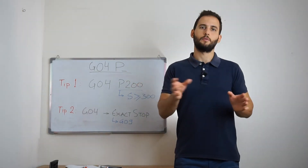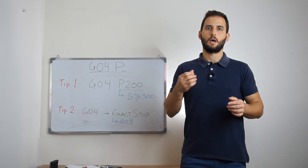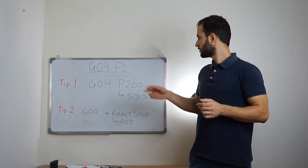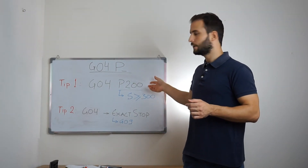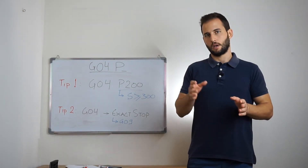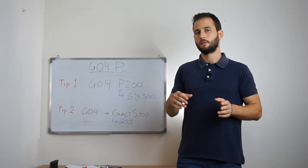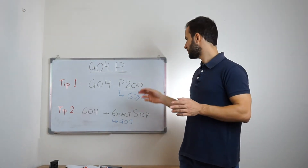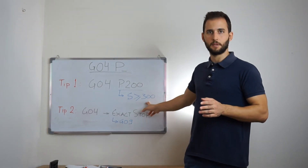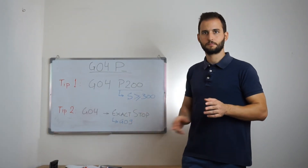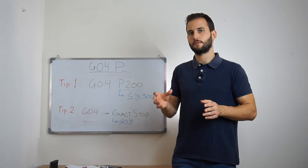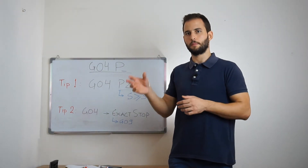But in order to avoid that, I personally, most of the times, use 200 milliseconds. This is appropriate for spindle speeds more than 300 RPMs. So this will save some programming time.